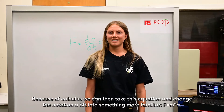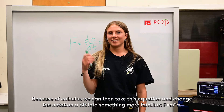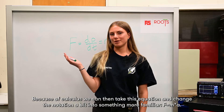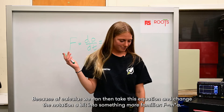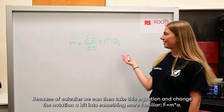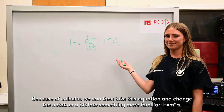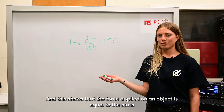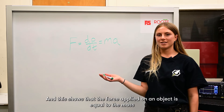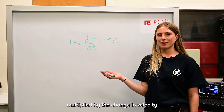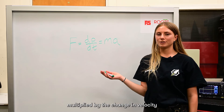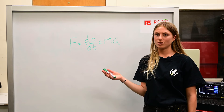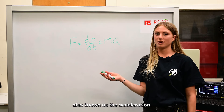Because of calculus, we can then take this equation and change the notation of it to something more familiar: f equals ma. And this shows that the force applied on an object is equal to the mass of that object multiplied by the change in velocity, also known as the acceleration.